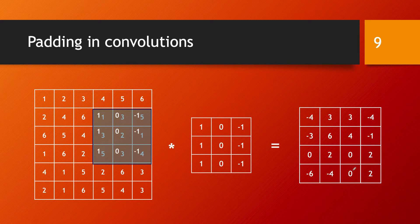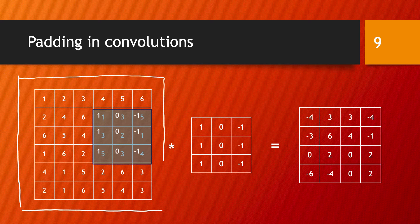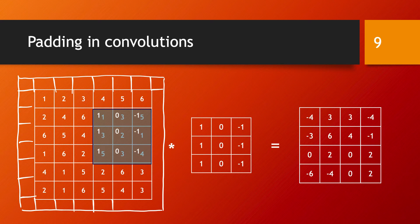One way to solve both of these problems is to use the padding idea. You pad around your input matrix — you add one row at the beginning and one row at the end, and one column at the beginning and one column at the end. You fill all these extra entries with zeros, which is a good choice so that you don't influence the calculation of the convolution.